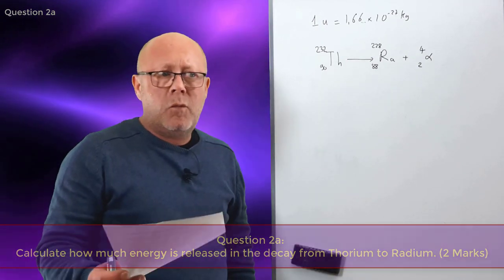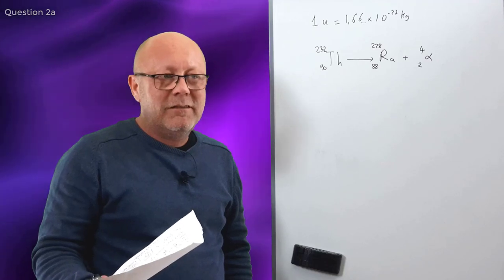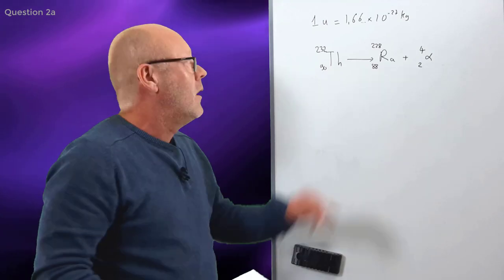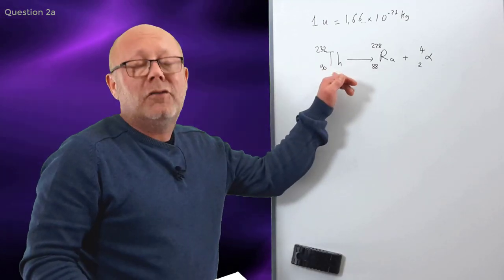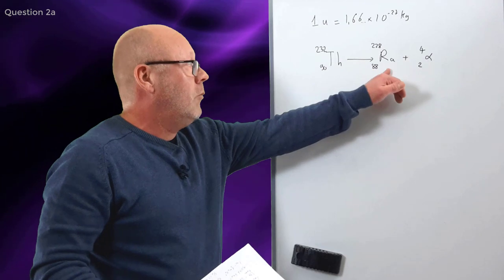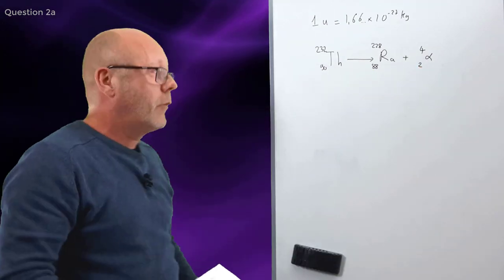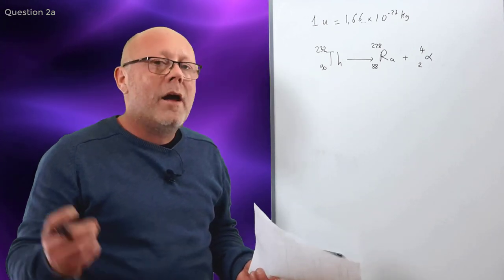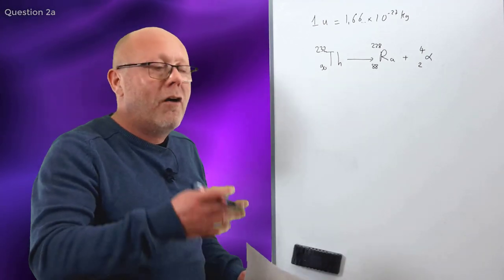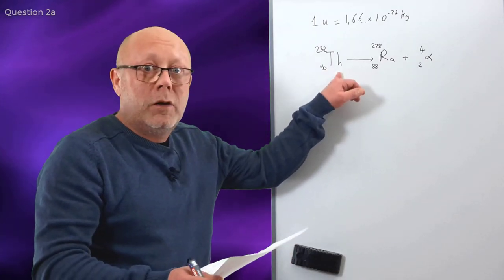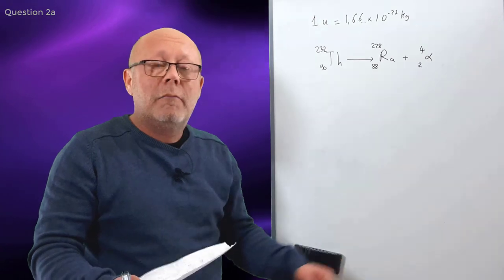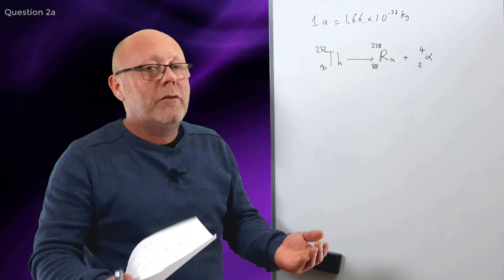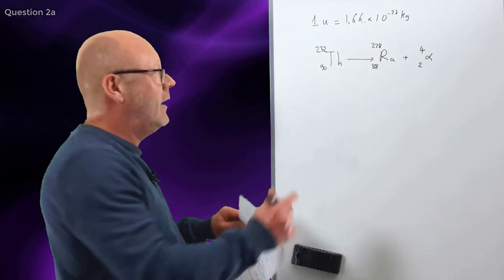Well, why does it release energy? Well, because every natural reaction will release energy to stabilize the system. The thorium nucleus is trying to stabilize. So, it decays into radium and alpha and energy. How do we find it? Where does this energy come from? Well, it comes from the conversion of some of the mass of the nucleus into energy. Yeah, mass and energy are two sides of the same coin. They are equivalent according to Einstein, right? E equals mc squared.